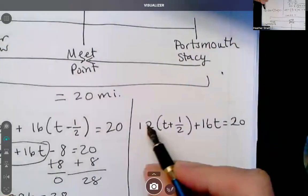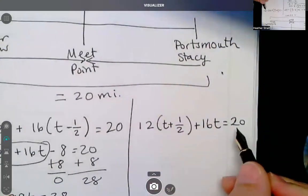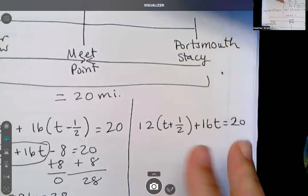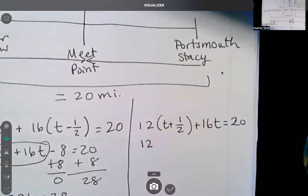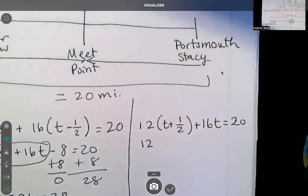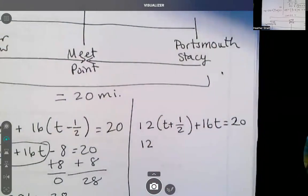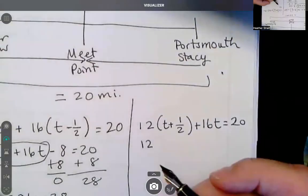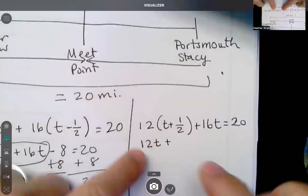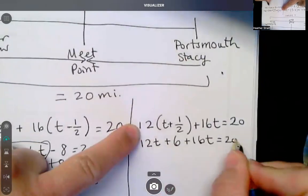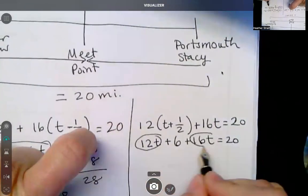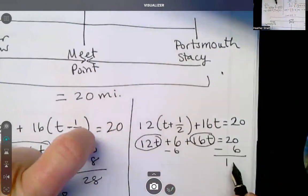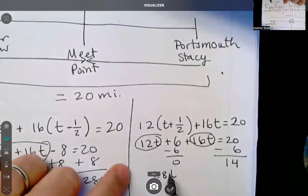Did you set your equation up like this? I did 16 plus 12 times. Well, yeah, this doesn't matter. That's fine. So it might be one half or something, because then it's in terms of Stacy's time who left 30 minutes later. You have to look at who's the T. Yeah. One half is correct. Okay. So 12T plus what's 12 times a half? Six plus 16T equals 20. Minus six minus six. 14. 28T equals 14. Yeah. One half.